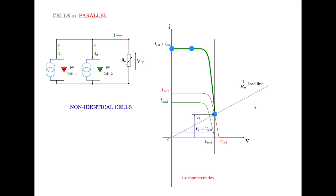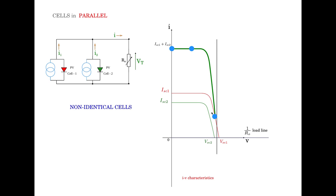Let us shift the load line further down along the horizontal axis. In that case R0 is infinite, meaning the terminals are open-circuited, and Vt represents the open circuit voltage of the combined parallel system. The open circuit voltage of the combined system is in between VOC1 and VOC2, as indicated by the line drawn through these points.